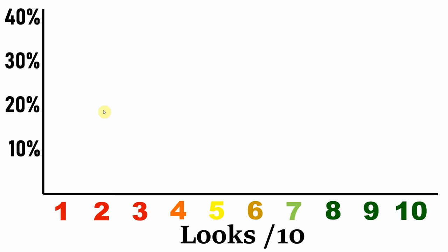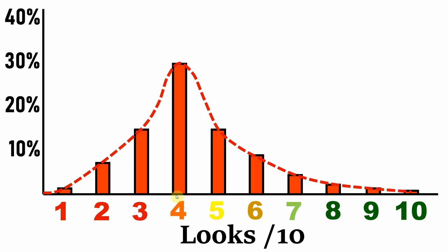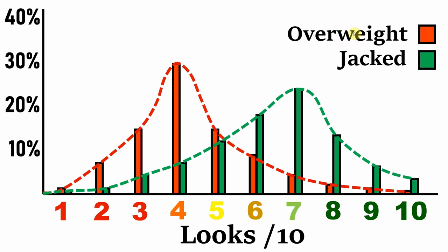then very few people at the extremes of the graph being either really good looking or really unattractive. Some people even think it looks like this, where there's actually more guys below a 5 than above a 5, making the average rating a 3 or a 4.